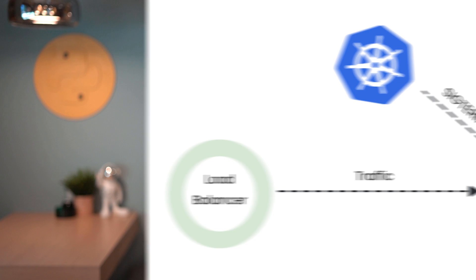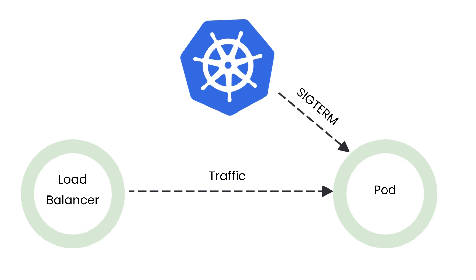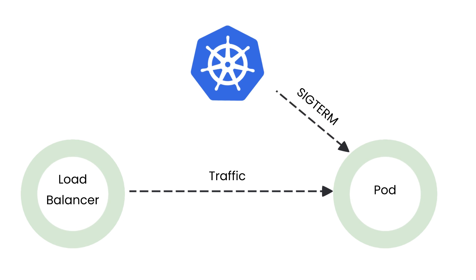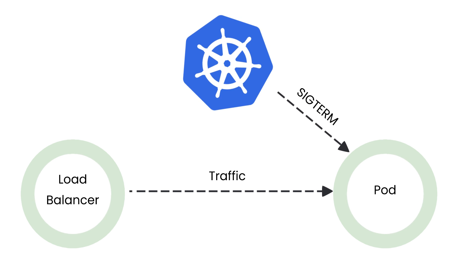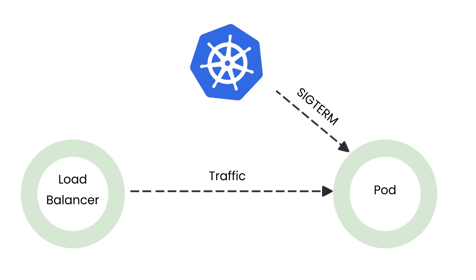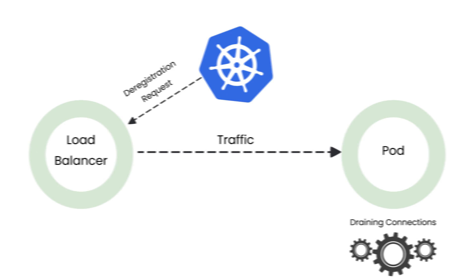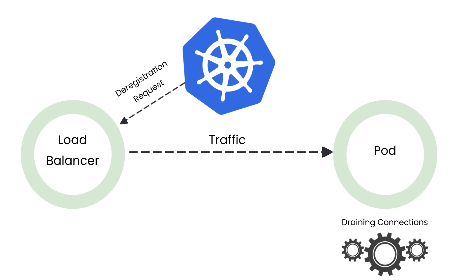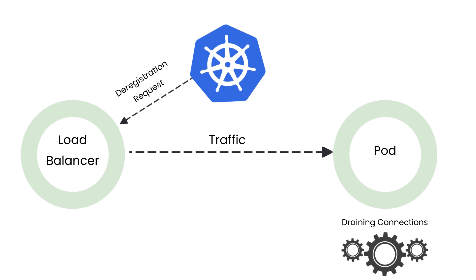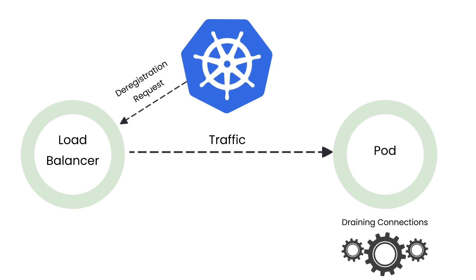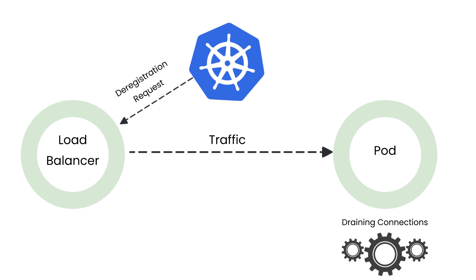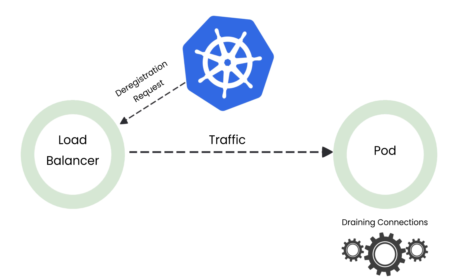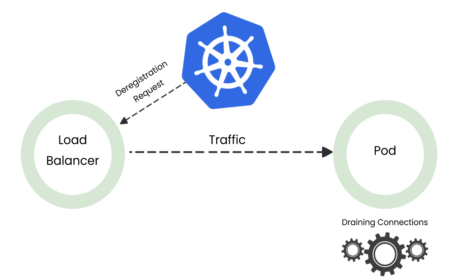So how does a SIGTERM work? Our process receives the SIGTERM from our operating system and Kubernetes in order to start a graceful shutdown process. And in this process, it might tell the ingress controller to deregister it from receiving additional traffic and finish processing all of the tasks that it has before terminating.